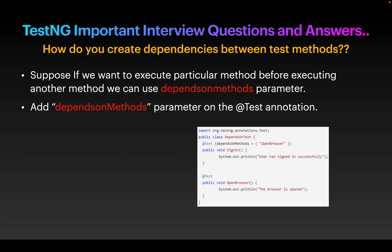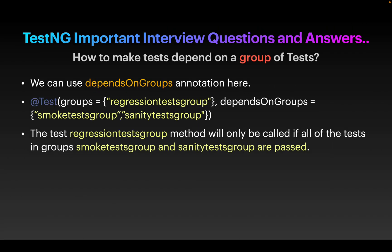Next question: how do you create dependencies between test methods? Consider one test method is depending on another — we have an annotation called dependsOnMethod in TestNG. For example, I have a test called open browser and a test called sign in. The sign in test is dependent on open browser, so open browser will execute first and after it passes, the sign in method will execute. This is the purpose of the dependsOnMethod annotation.